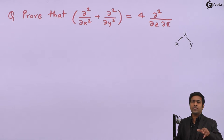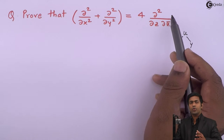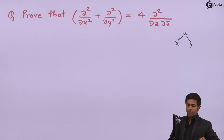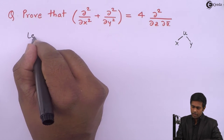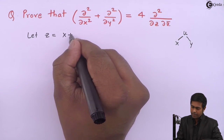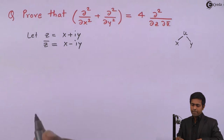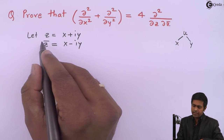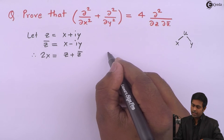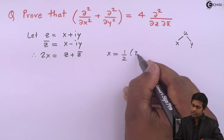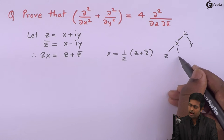This means u has to also be a function of z and z̄. On one side u is a function of x and y; on the other side we want u to be a function of z and z̄. To achieve this, we will find the composite function through x and y. We assume a complex number z = x + iy, so z̄ = x − iy. Adding the two equations gives z + z̄ = 2x, so x = ½(z + z̄), meaning x is a function of z and z̄.